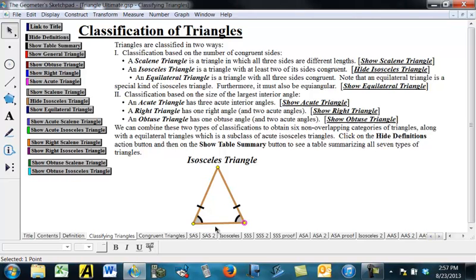So, that's an isosceles triangle, a triangle with at least one pair of congruent sides.